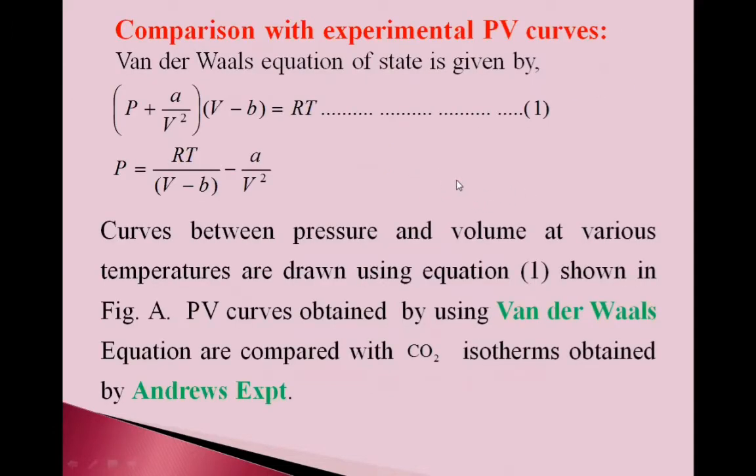Van der Waals equation of state is P plus a upon V square into V minus b equals RT, equation 1. From this, P can be calculated as P equals RT upon V minus b minus a upon V square. Curves between pressure and volume at various temperatures are drawn using equation 1, shown in Figure A. PV curves obtained by Van der Waals equation are compared with CO2 isotherms obtained by Andrews' experiment.